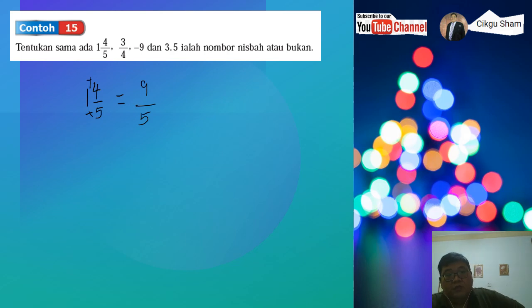Okay, so 5 darab 1 tambah 4, 5 darab 1, 5 tambah 4, dapat 9 per 5. Jadi 9 integer, 5 pun integer kan. So adakah dia nombor nisbah? Okay, 3 per 4, 3 integer, 4 pun integer, adakah dia nombor nisbah? Okay, negatif 9, okay dia 1 je kan, tapi sebenarnya kalau saya nak buat dalam bentuk A per B, okay atau P per Q, boleh je dia per 1. So adakah dia nombor nisbah?